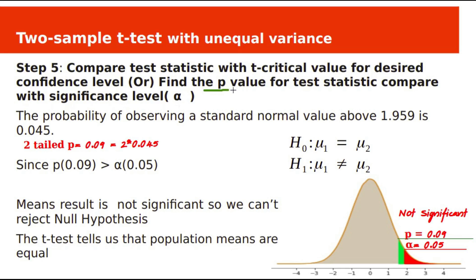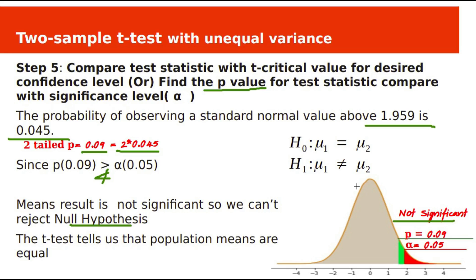We can also test the hypothesis using p-values. The p-value for t-statistic 1.959 from the t-table is 0.045 (one-tailed). Since this is a two-tailed test, we multiply by 2, giving a two-tailed p-value of 0.09. Since 0.09 is not less than alpha 0.05, we cannot reject the null hypothesis, and the results are not significant in support of the alternate hypothesis.